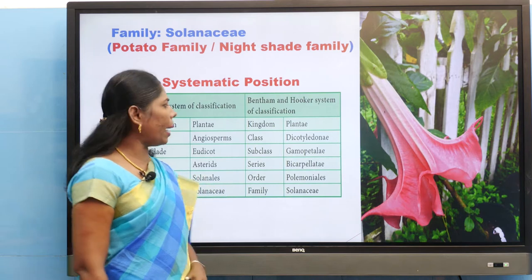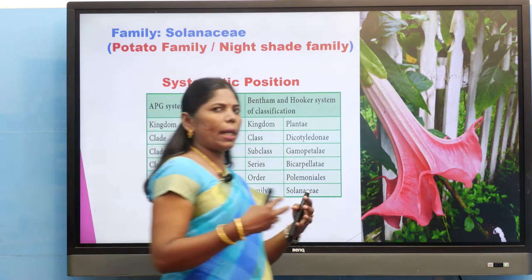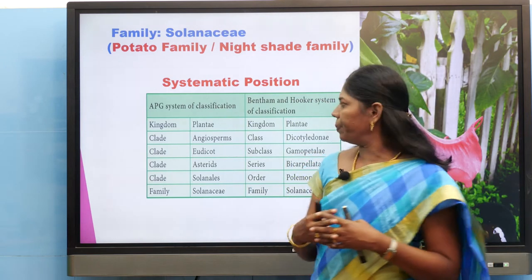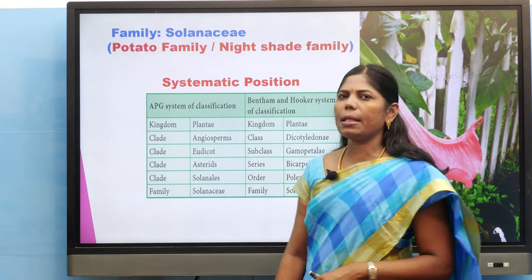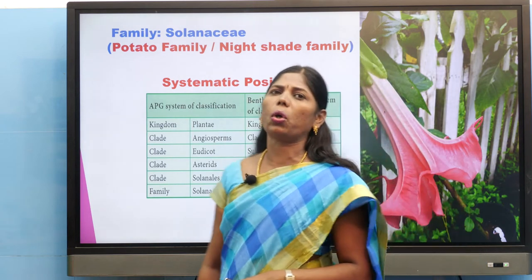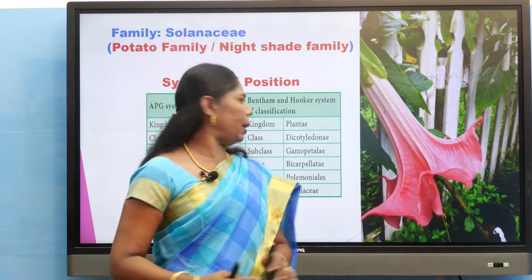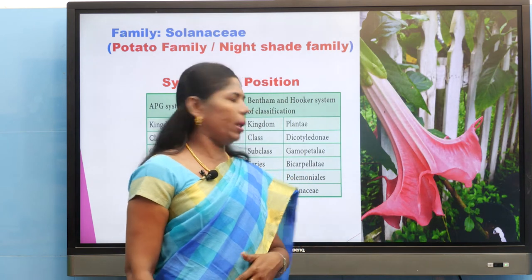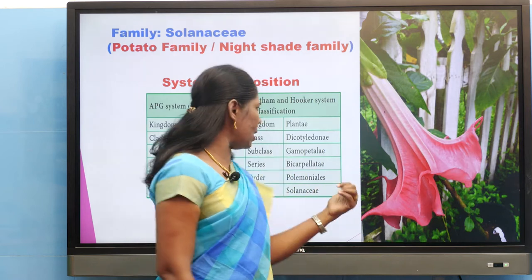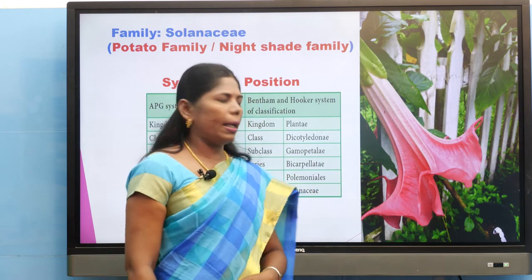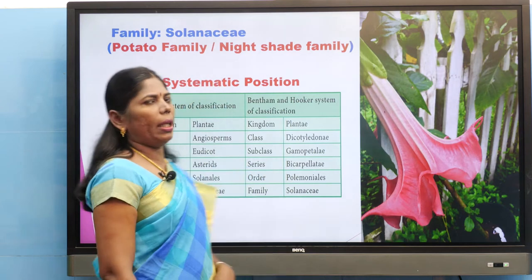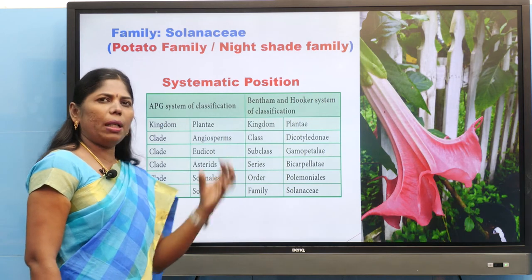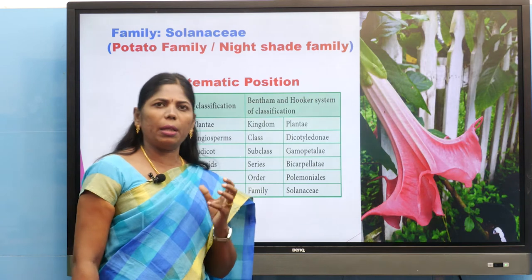The next level is subclass Gamopetalae — 'gamo' means united, so the petals are united, also called sympetalous condition. Series is Bicarpellatae because it has two carpels. The order is Polemoniales, and the family is Solanaceae. This Bentham and Hooker systematic position is very important and may be asked as a two or three mark question.